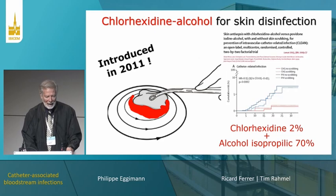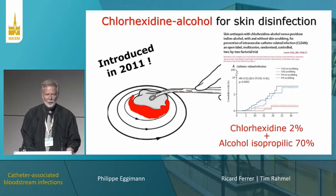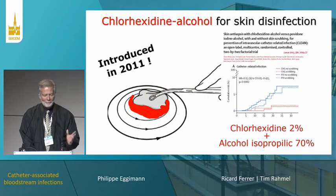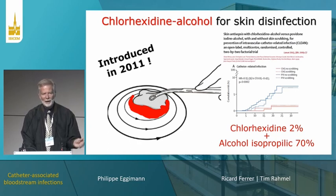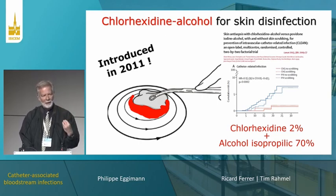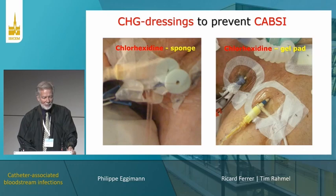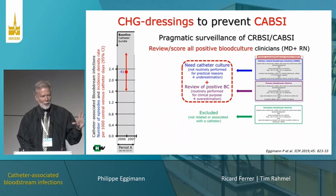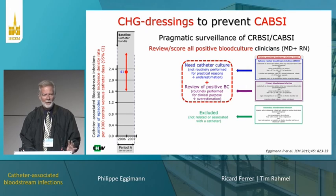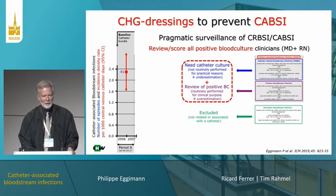We introduced chlorhexidine 2% in 70% alcohol more than 10 years ago. Eventually, Olivier Mimaud, Jean-François Timsit, and their teams definitively showed that chlorhexidine alcoholic solutions work better than iodine solutions, even alcoholic iodine solutions. This study also showed it is no longer necessary to scrub the skin — you just let the alcohol evaporate to destroy microorganisms. We then decided to use chlorhexidine-impregnated dressings. We have a 35-bed mixed surgical and medical ICU in Lausanne, plus 100 intermediate care beds with very severe patients.